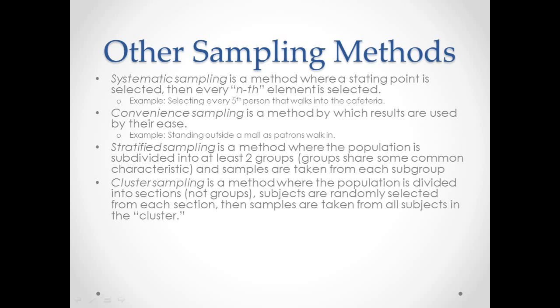We randomly select, but we have to make sure that there's one from each section—at least one from each section, preferably more—and we take the samples from those subjects and we call it the cluster.